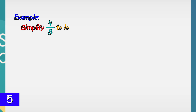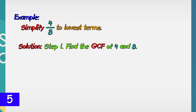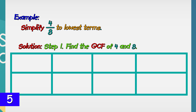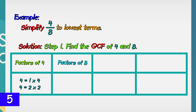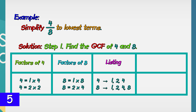Simplify 4/8 to its lowest terms. Step 1: find the GCF of 4 and 8 by listing the factors of both numbers. The factors of 4 are: 1 × 4 = 4, and 2 × 2 = 4. The factors of 8 are: 1 × 8 = 8, and 2 × 4 = 8. Now let us list the factors of 4 and 8 to look for the greatest common factor.